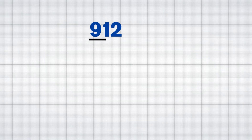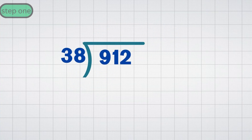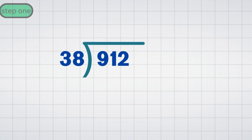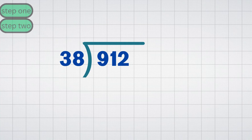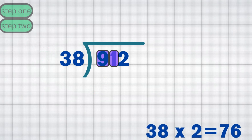Example 3: 912 divided by 38. Step 1: Set up the long division. 912 is the dividend; 38 is the divisor. Step 2: Divide the first two digits. Look at 91, the first two digits of 912. 38 fits into 91 two times, because 38 multiplied by 2 equals 76. Write 2 in the quotient above the 1 in 912.